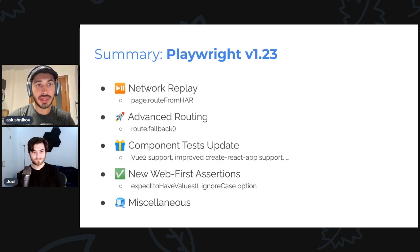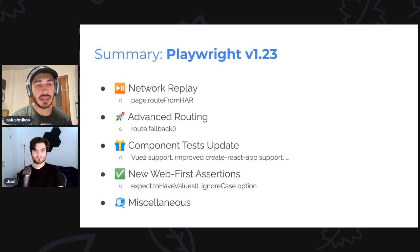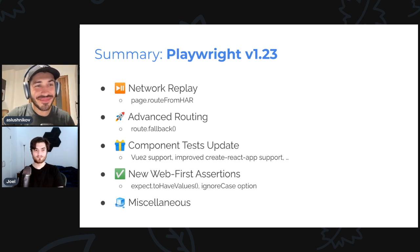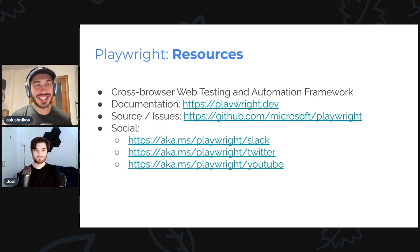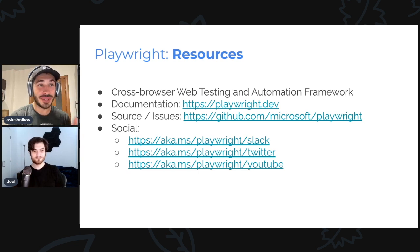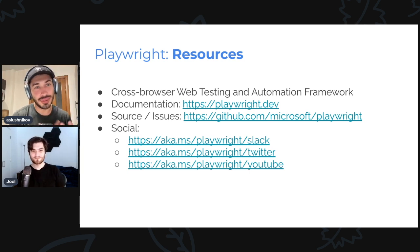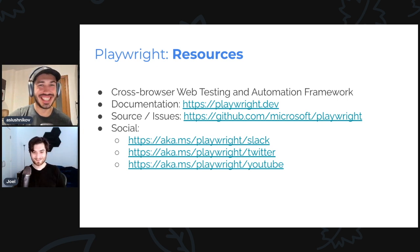Summary: we have network replay, advanced routing with the new fallback API, many new things coming to component tests, a bunch of new web-first assertions, and miscellaneous improvements — most notably, Playwright for .NET got API testing and Ubuntu 22 support. This is it for this release. If you like what we do, please head over to our documentation, file issues, and give us a star on GitHub. We're also available on Slack, Twitter, and YouTube. See you in 1.2.4!